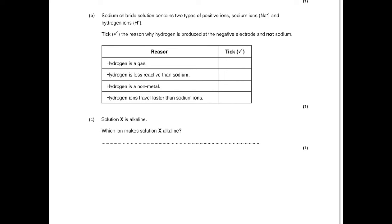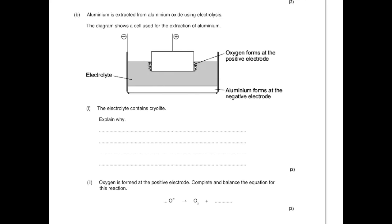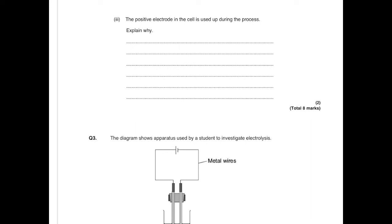Solution X is alkaline. Which ion makes solution X alkaline? That's OH-. Aluminium is extracted from aluminium oxide using electrolysis. The electrolyte contains cryolite — this is because cryolite lowers the melting point of aluminium so less energy is needed to melt it. Oxygen is formed at the positive electrode — complete and balance the equation. We know oxygen is diatomic so there's a 2 on the right-hand side, meaning we put a 2 in front of the OH-, giving us 4 electrons on the left-hand side, so we write +4e-. The positive electrode is used up during the process because oxygen forms at the electrode and reacts with the carbon of the electrode to form carbon dioxide, which burns away the electrode.